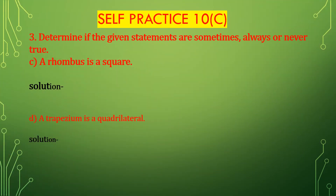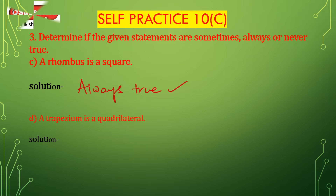Now bit C: a rhombus is a square. This is always true. Bit D: a trapezium is a quadrilateral. A trapezium is a quadrilateral — this is always true.